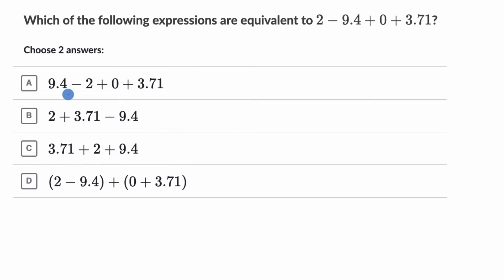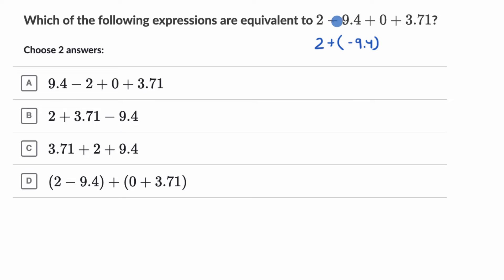So this first choice, we have 9.4. Here we subtracted 9.4. Now when you subtract a number, you can also view it as adding its opposite. So we could rewrite this top thing as two plus negative 9.4. When we subtract 9.4, that's the same thing as adding negative 9.4.